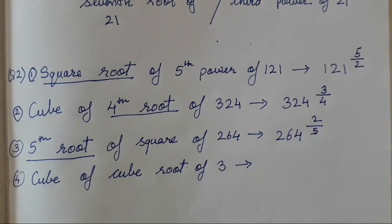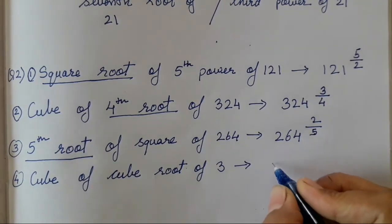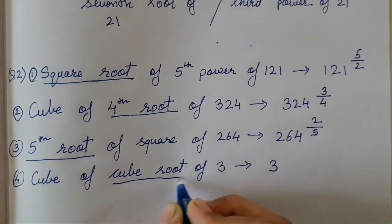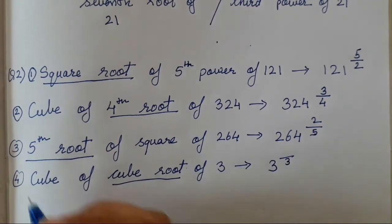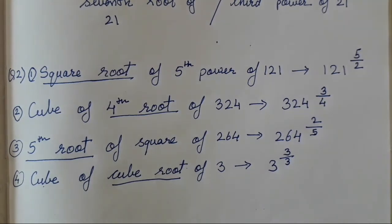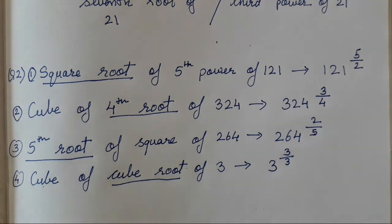For the cube of the cube root of 3: cube root means 3 in the denominator and cube means 3 in the numerator, giving 3 raised to 3 upon 3. I hope this exercise is very clear for you all. If you have any queries, please let me know in the comment section — I would love to hear from you all. See you in the next video. Till then, take care. Bye.